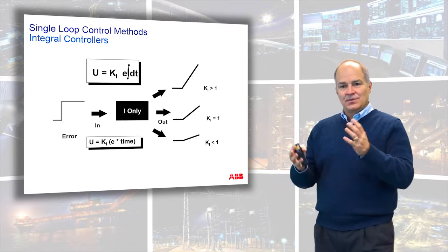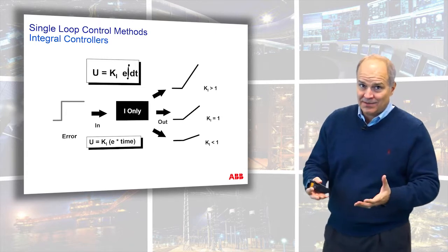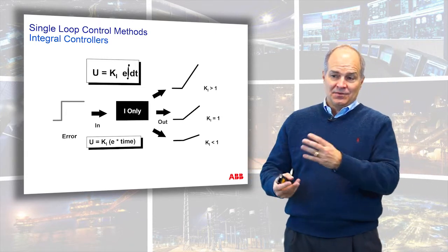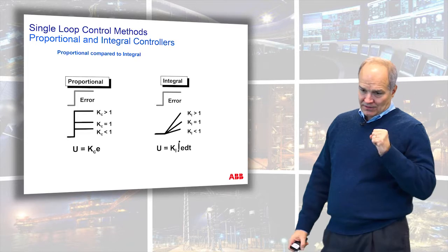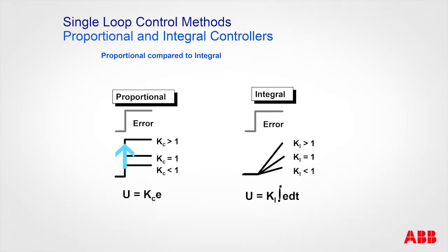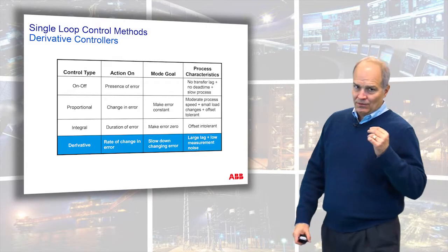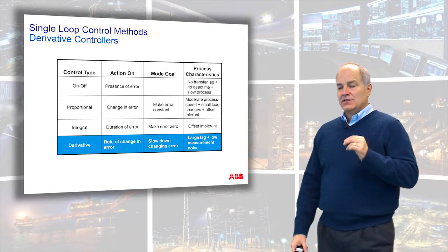Comparing proportional and integral: proportional gives you a P-kick — for a given error with three different gains you can see a big immediate response. Integral is much slower to respond initially. When the error first happened, proportional took off immediately and then stopped, while integral said 'it's still there' and kept building. Over time integral becomes a very powerful component.